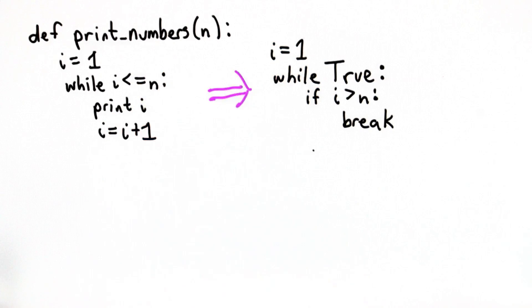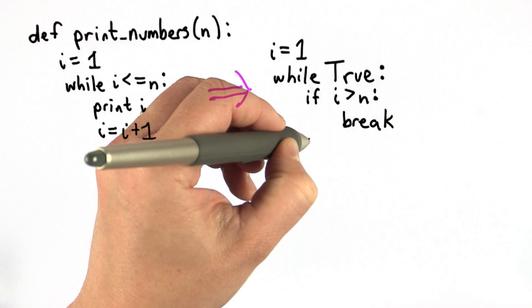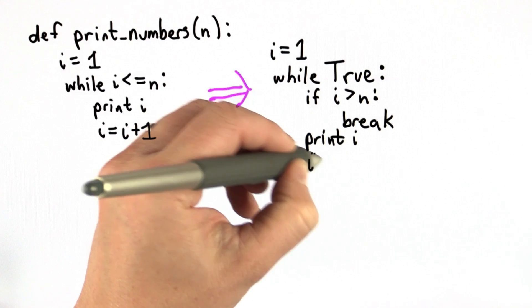If i is not greater than n, we're going to keep going. We'll do the same thing we did before. We'll print i and add one to i.